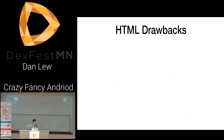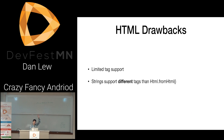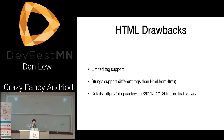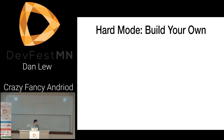There are serious limitations with using HTML. Limitation one: it has very limited tag support — it's a limited subset of tags, and which tags are supported varies between the code version and string resource version. I wrote a blog post back in 2011 about this going into more detail. HTML in text views is useful for basic internationalization, like if you want to bold one word in a sentence. But in general, if you want to do something complicated, you should really build your own. The hard mode is building your own — only in code, much more verbose, but super flexible and powerful.